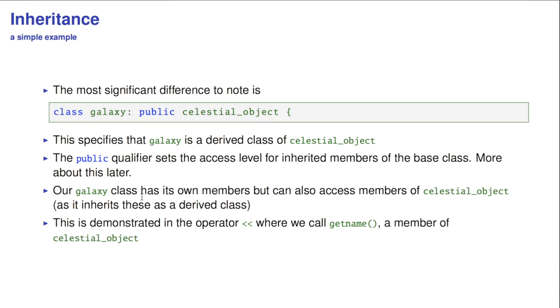Our galaxy class has its own members, but can also access members of celestial object, and it inherits these as the derived class. This is demonstrated in the insertion operator where we call getName, which is actually a member of celestial object, not a member of galaxy class itself at all.